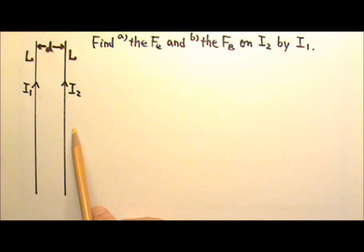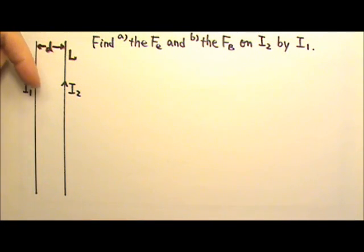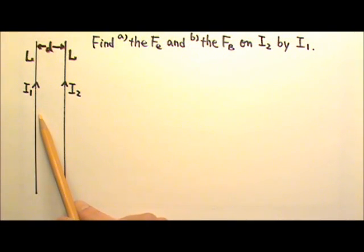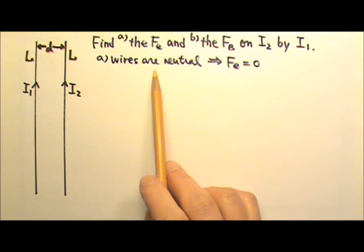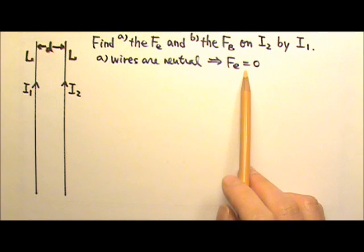Electric currents are flowing charges. If this is a metal wire, we would really have negatively charged electrons flowing down this way. But the wire is not negatively charged, because we still have the same number of protons and electrons inside the wire. So the wires are electrically neutral, therefore there is no electric force between the two.